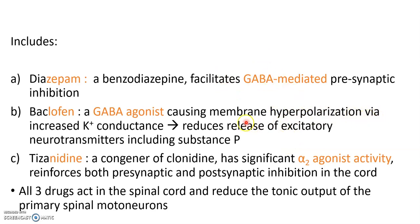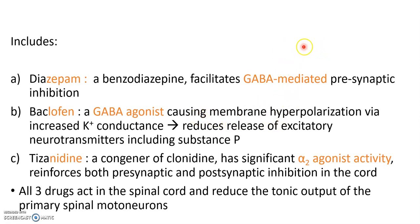Hyperpolarization works by increasing potassium conductance — potassium moves out of the cell, making the membrane more negative. This is opposed to depolarization, which makes the membrane more positive. Hyperpolarization reduces the release of excitatory neurotransmitters, including substance P.